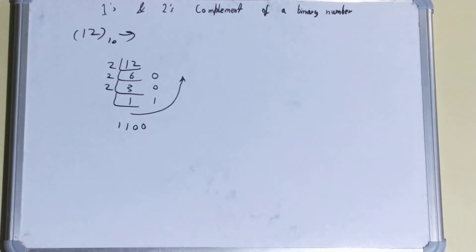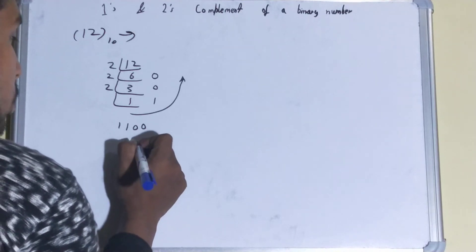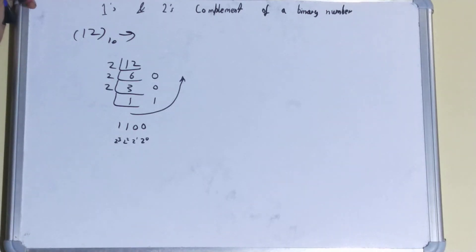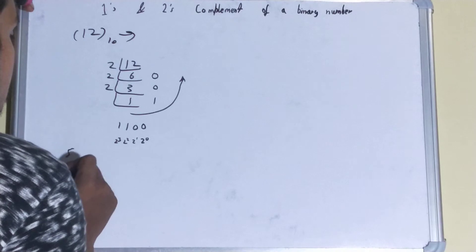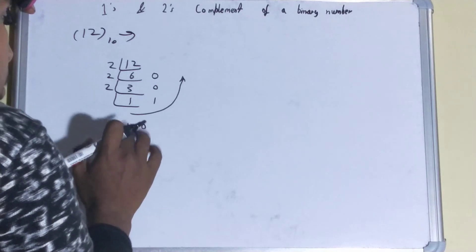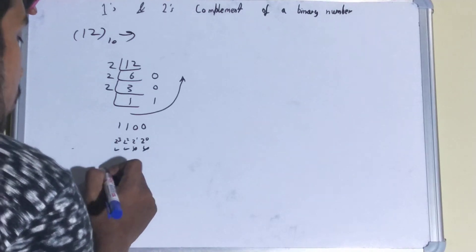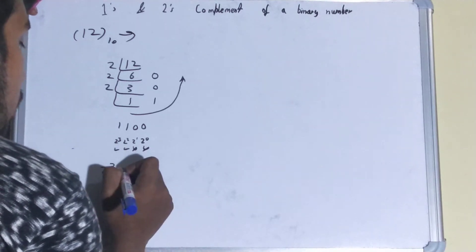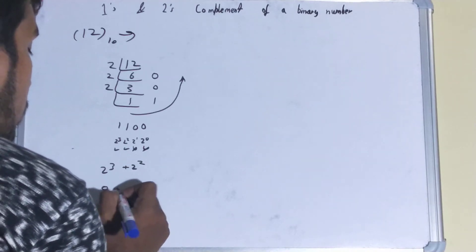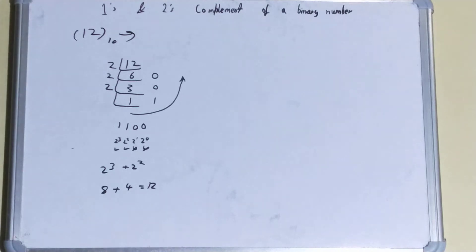If you want to convert it back from binary to decimal, you put the powers of two below: 2^0, 2^1, 2^2, and 2^3 for four digits. If there are five digits, you continue with 2^4, 2^5, 2^6, and so on. Wherever there is a one, you pick that power. So we pick 2^3 plus 2^2, which is 8 plus 4 equals 12. That's how you convert binary to decimal and decimal to binary.